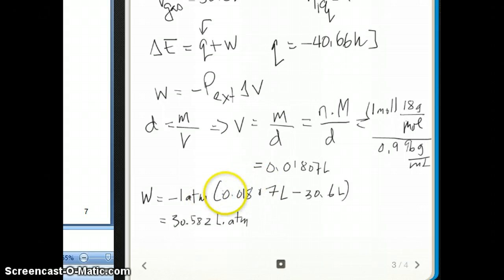And then, so then you plug the volume to the work equation. So you say that it's negative P external times delta V. P external is 1 atmosphere. The final volume is the volume of the liquid. The initial volume is the volume of the gas. And you notice what happens here is I put the negative sign in there because that's part of the equation. So you have to include that as part of the equation. And when you do that, you calculate the value to be 30.582 liter atmosphere.